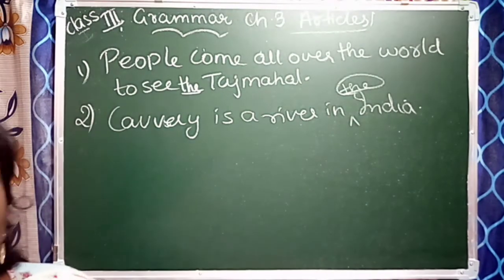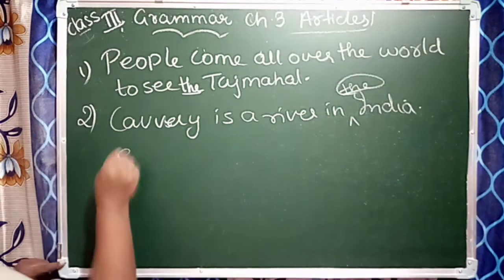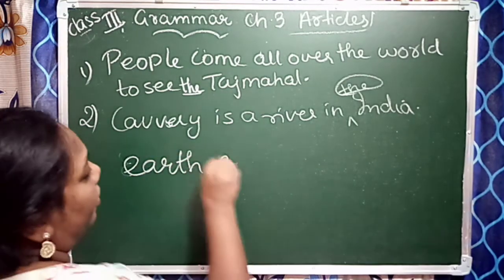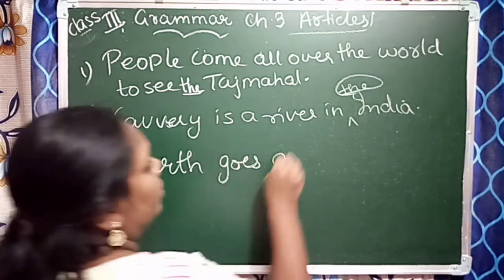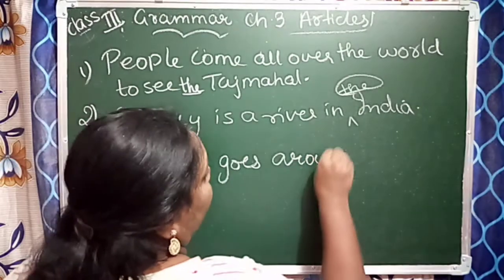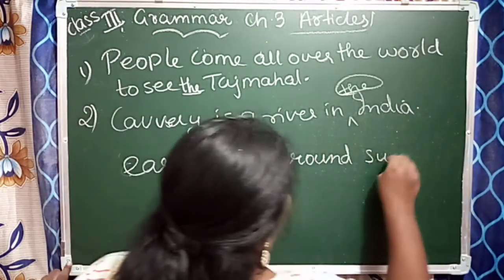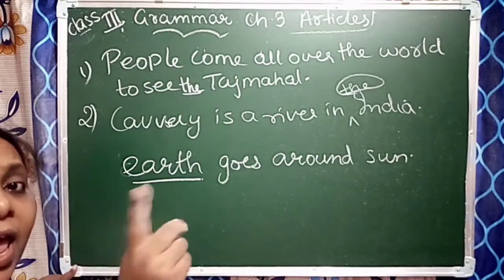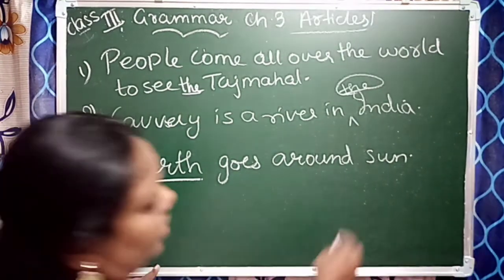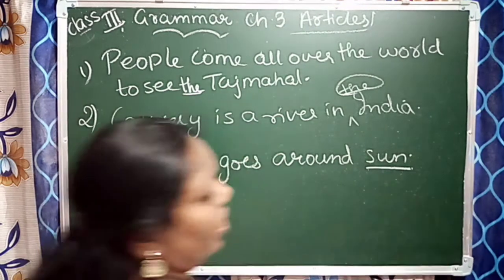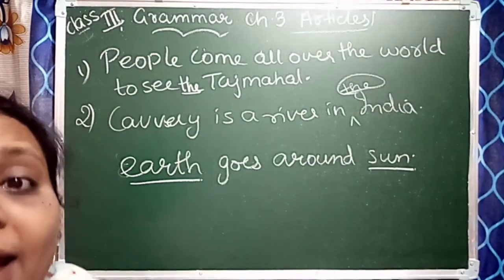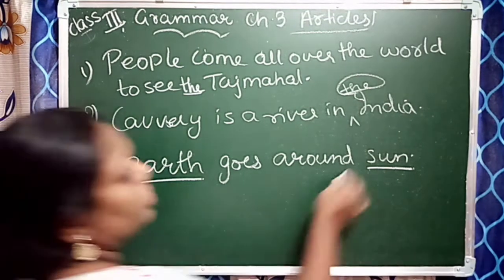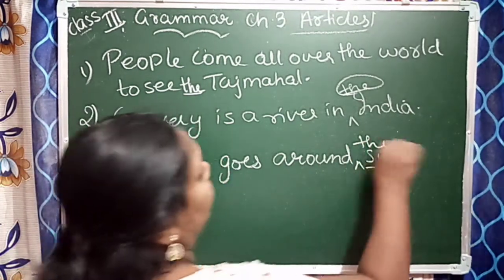Third one: 'Earth goes around sun.' Earth is one thing only, and sun is also unique. So we will write 'The earth goes around the sun.'